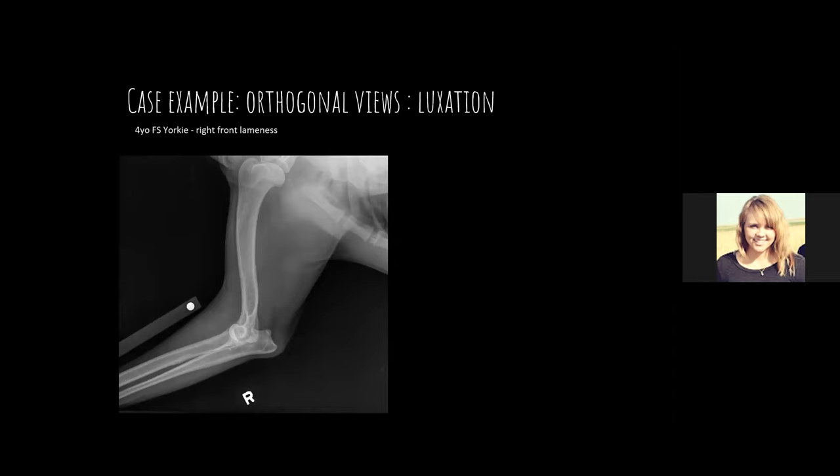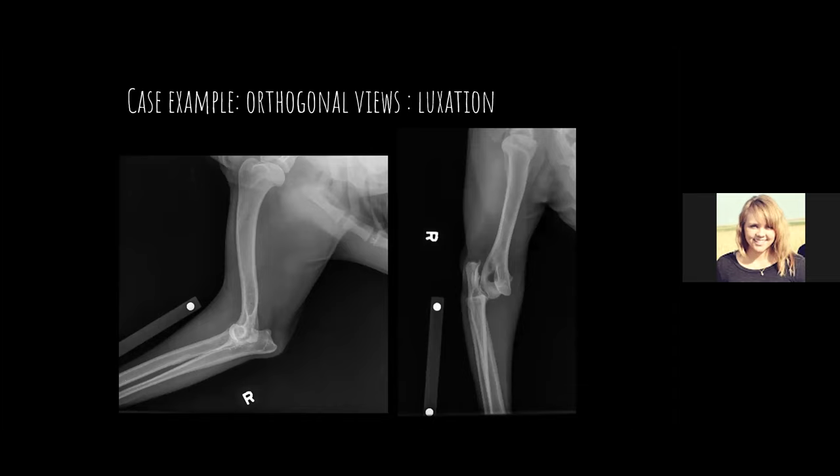One of my favorite cases: a four-year-old female spayed Yorkie came in for right front lameness with pain identified at the elbow. On the first view, we didn't see much. But on the opposite view, that's not normal — it was fully luxated, which requires surgical intervention.